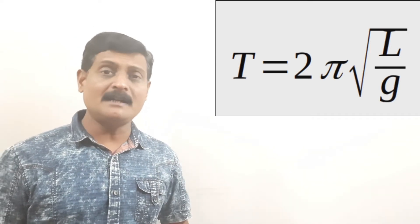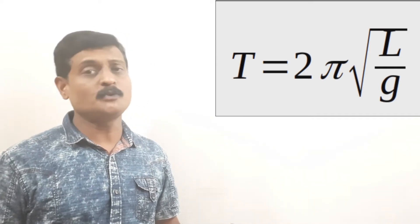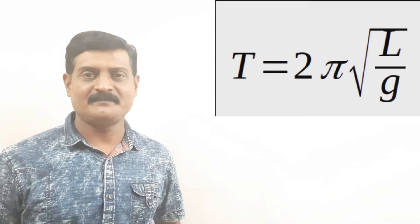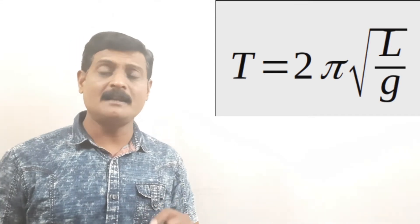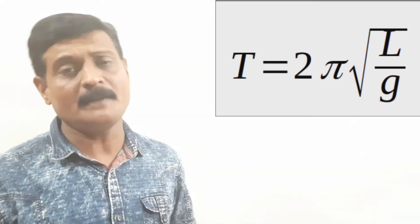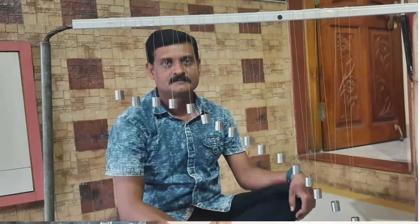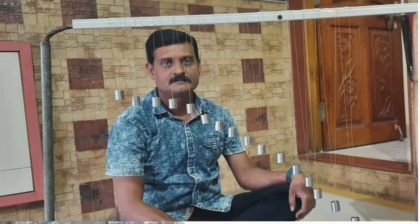The time period T is equal to two pi under root L by g, where L is the length of the simple pendulum and g is gravitational acceleration. In the pendulum wave, there are a number of simple pendulums — here I take 16 simple pendulums.